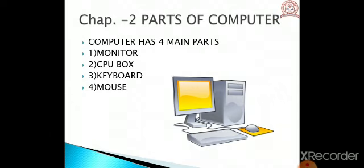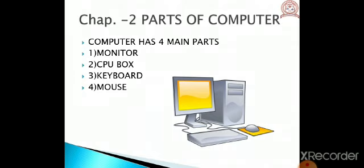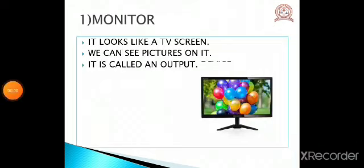The computer has four main parts. Which are they? First, monitor. Second, CPU box. Third, keyboard. And fourth, mouse. So children, let's study about the various parts of computer.